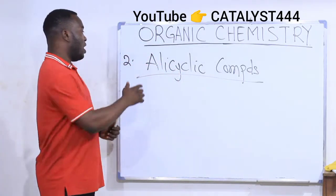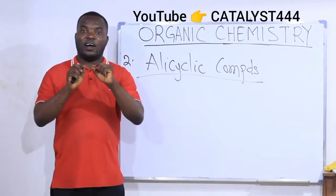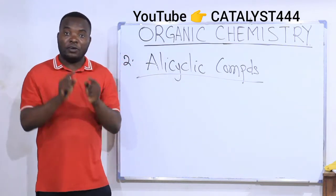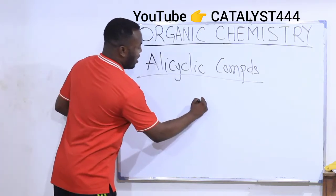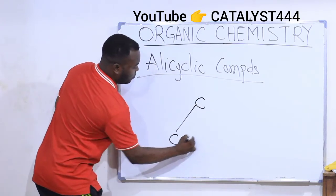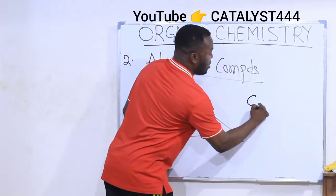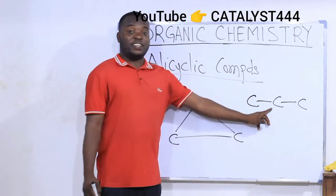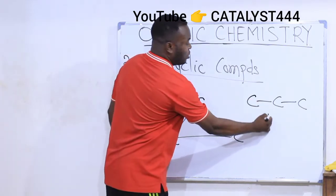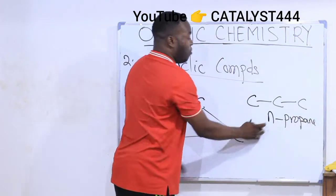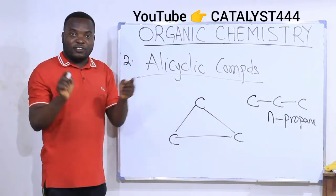The second class of compounds are the ones we call alicyclic compounds. They are those organic compounds that have the cyclic structure or the ring structure. For instance, if we take propane — normally when it is open like CH3CH2CH3, that is aliphatic open chain — but when it is in closed ring form, that is alicyclic. This open form is called normal propane, where 'normal' means open chain.